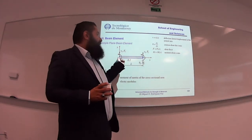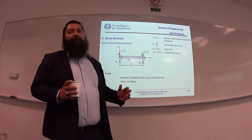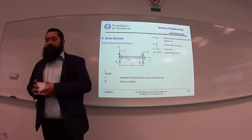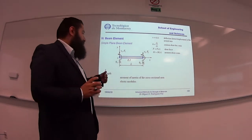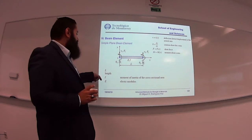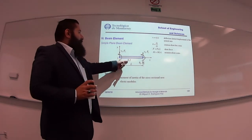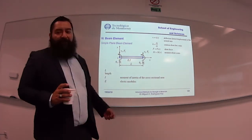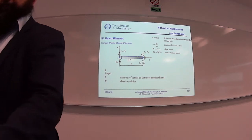This is the beam element: node i, node j — one line. Now we have all the properties that we need to consider here. We have the modulus of elasticity and the moment of inertia for the beam.